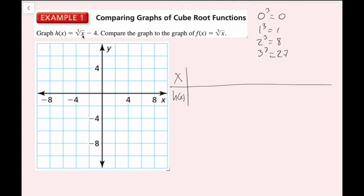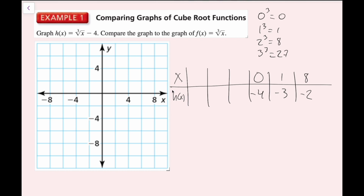I want whatever's under my radical sign to give me a clean number. So I'll put 0 in the middle: the cube root of 0 is 0 minus 4, that's negative 4. The cube root of 1 is 1, minus 4 is negative 3. The cube root of 8 is 2, minus 4 is negative 2. For the negatives: the cube root of negative 1 is negative 1, minus 4 is negative 5. The cube root of negative 8 is negative 2, minus 4 is negative 6.